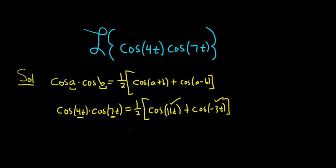Cosine is an even function, so the negative sign inside the cosine will go away. So we can distribute the 1 half. So we have 1 half cosine of 11t plus 1 half cosine of 3t.